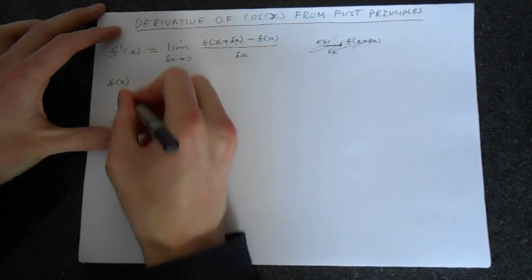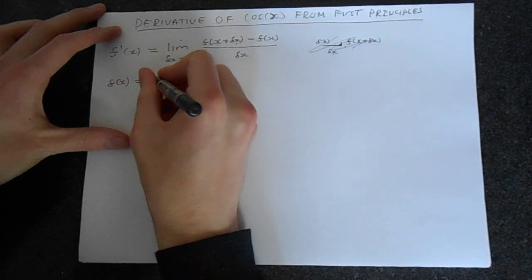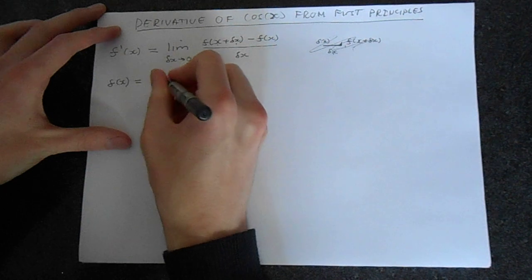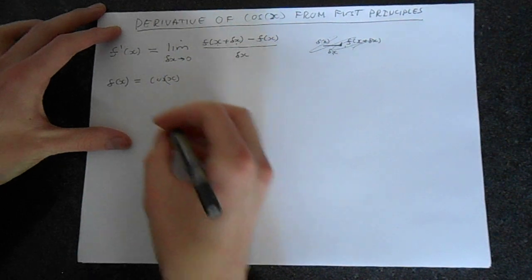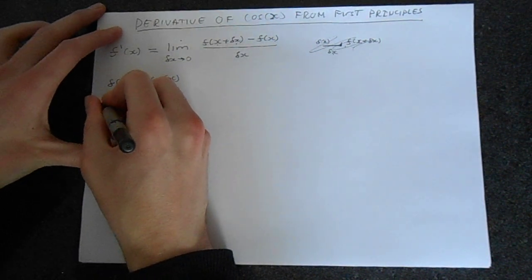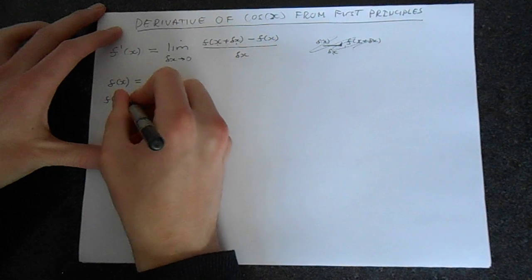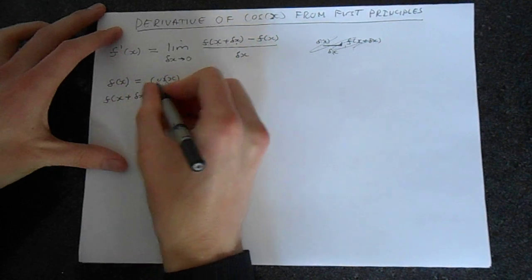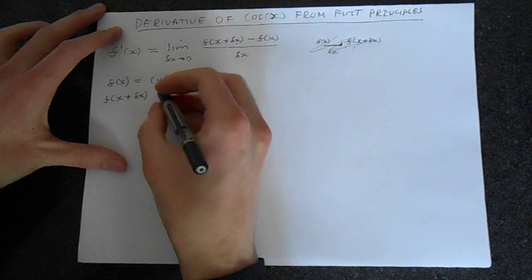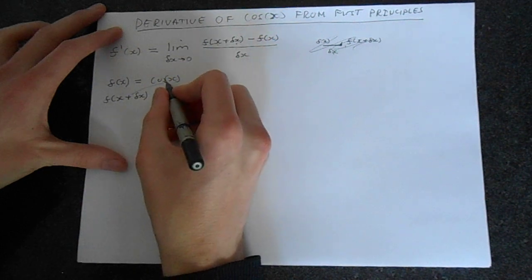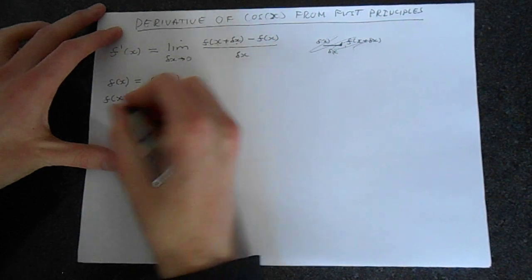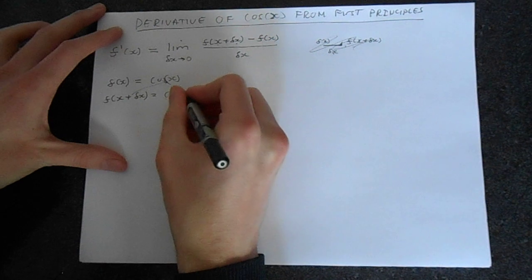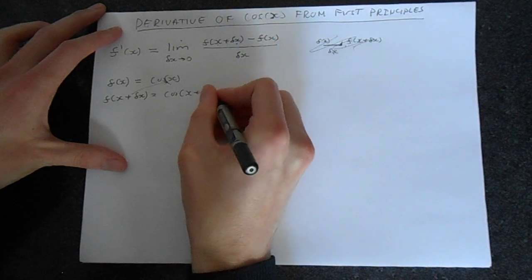OK, so f of x equals cos x. That's the function we're looking at. And then we want to go f of x plus delta x. So just substitute that in to here, like so. And you would get f of x plus delta x is cos of x plus delta x.